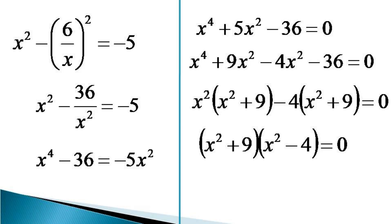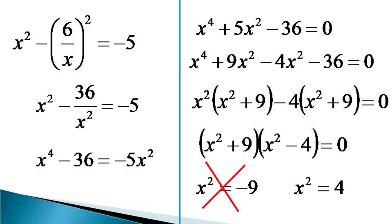We get two values of x squared: x squared is equal to minus 9 and x squared is equal to 4. Since we have already assumed that x is a real number, x squared cannot be equal to minus 9. So this value is discarded and we consider only x squared is equal to 4.